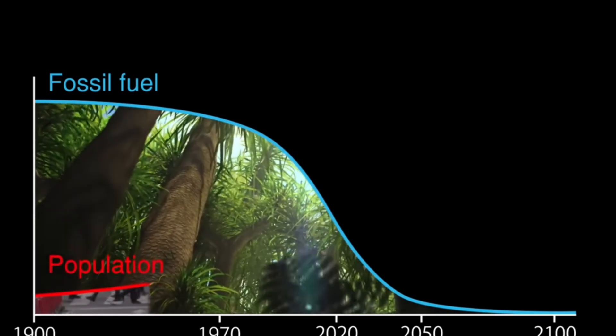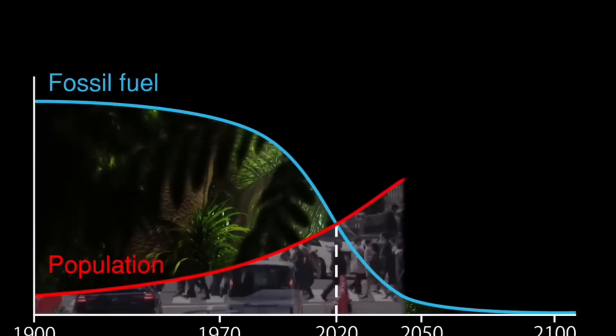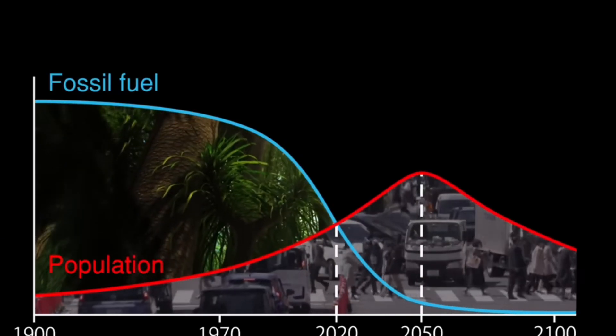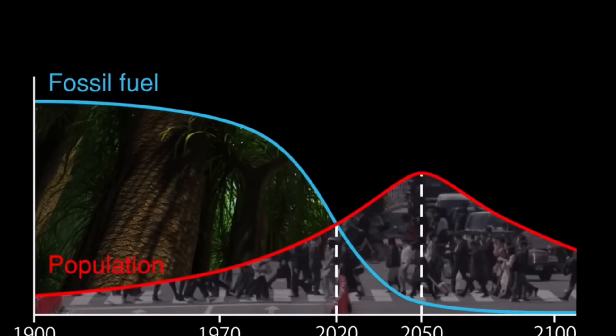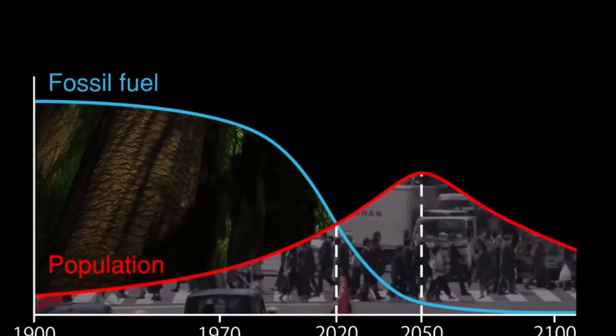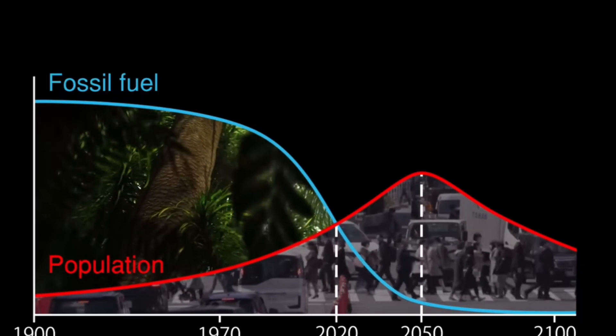As economies grew and technologies advanced, we could afford for people to specialize more deeply in narrow fields of study or types of work. This meant that individuals could build up deep expertise in specific areas like medicine, chemistry, or engineering, without needing to worry about survival or everyday necessities. Specialization allowed people to make very specific advancements...